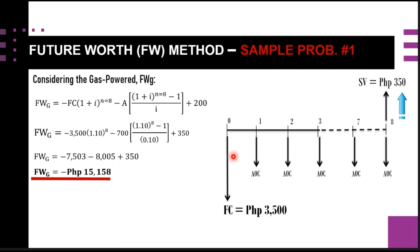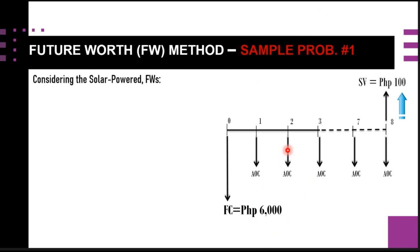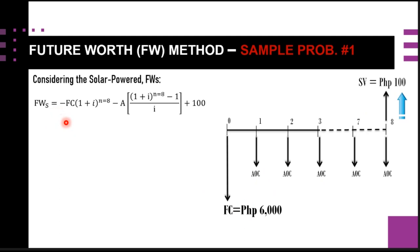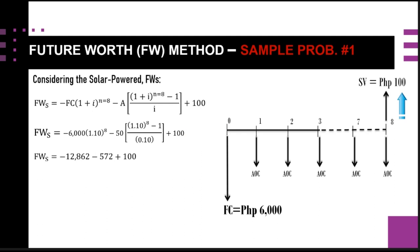For the third alternative — the solar-powered machine — the cash flow diagram shows a first cost of 6,000, an annual operating cost of 50, and a salvage value of 100. Substituting these into the FW formula, we arrive at FW_Solar = −13,334 pesos.